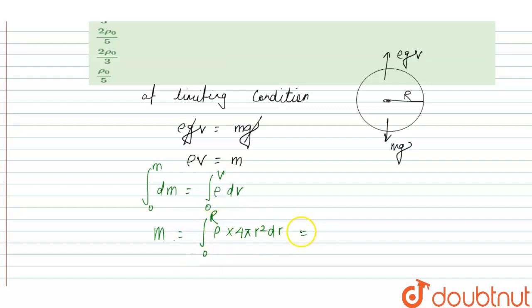Because r varies from 0 to R, we put the value of ρ. This equals the integral from 0 to R of ρ₀(1 - r²/R²) times 4πr² dr.